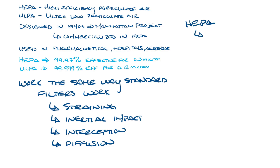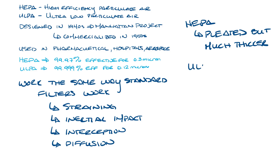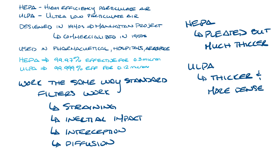HEPA filters are pleated filters, but they are much thicker than regular filters. ULPA filters, like HEPA filters, are thicker than regular filters, but they are also more dense than HEPA filters so they can catch the smaller particles.